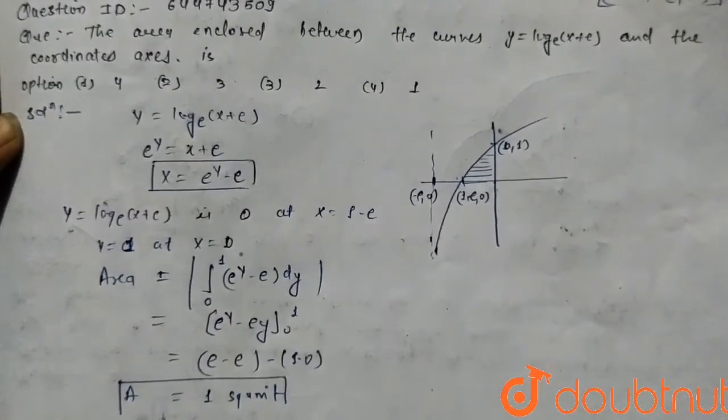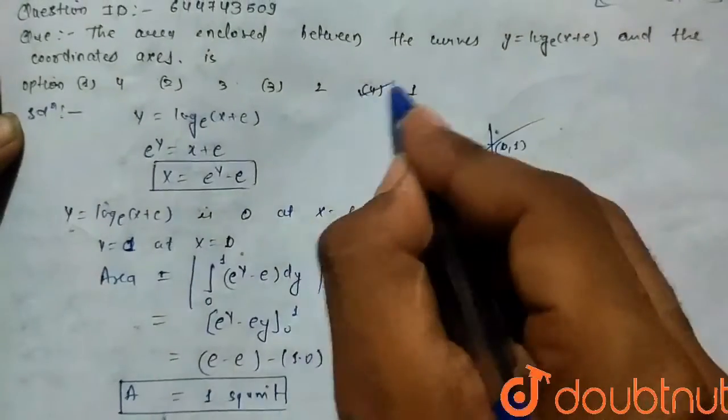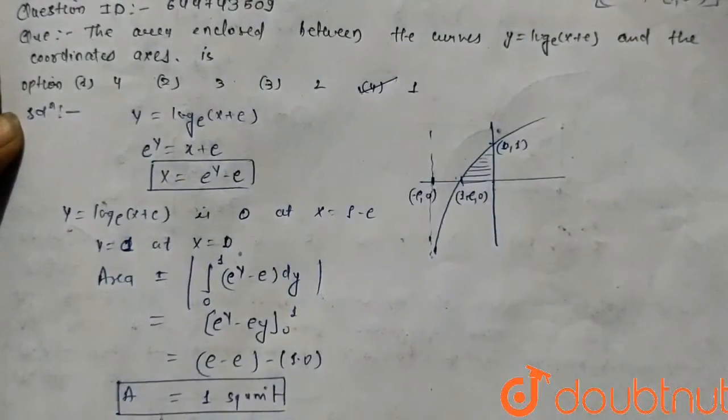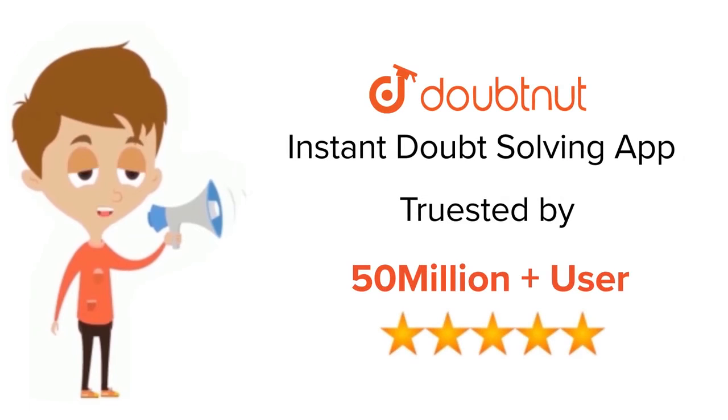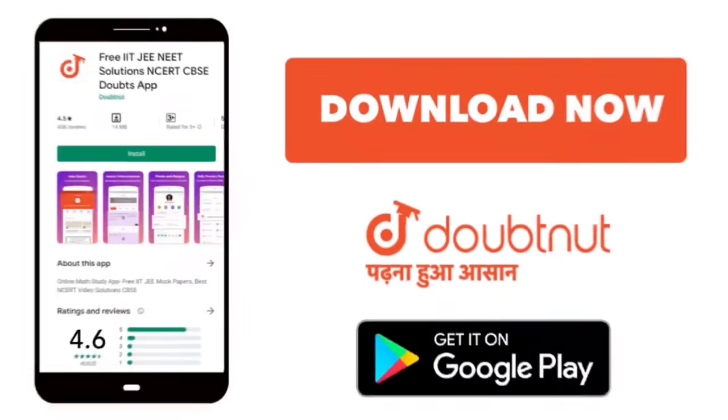So option 4 is correct. For class 6-12, IIT-JEE and NEET level, trusted by more than 5 crore students, download Doubtnut app today.